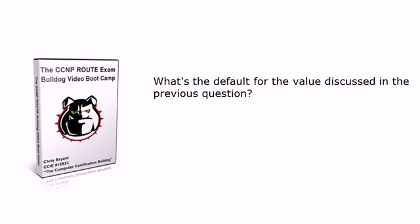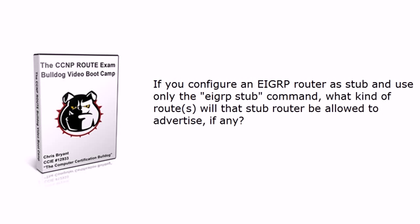EIGRP stub routing can be used to help limit the scope of DUAL queries. But if you configure an EIGRP router as stub and use only the EIGRP stub command with no options, what kind of routes will that stub router be allowed to advertise? This is something you've got to know, because IOS help might not help you out too much with that one.